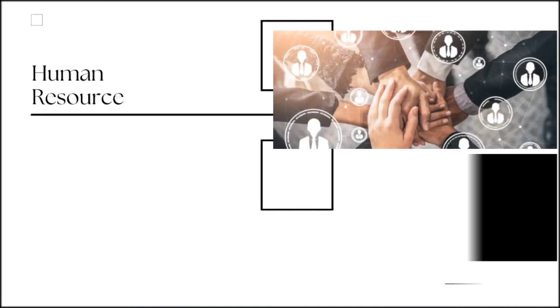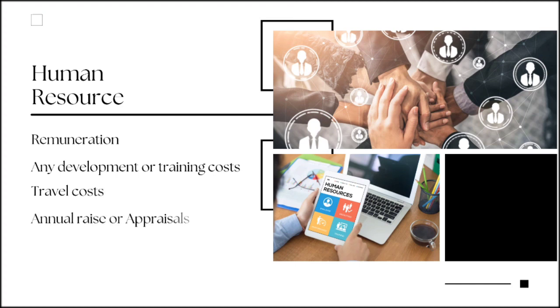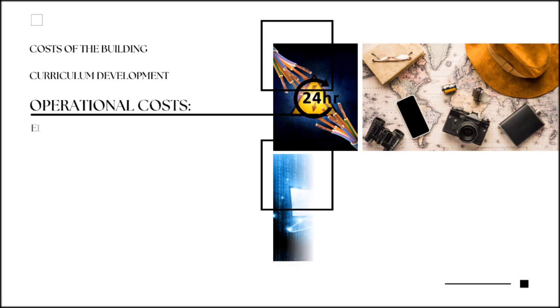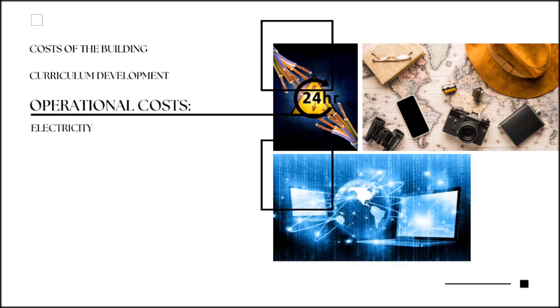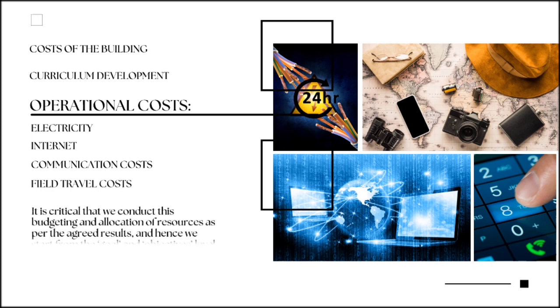For example, for human resources, we need to add remuneration, any development or training costs, travel costs, not forgetting the annual raise or appraisals, and other related costs. Similarly, we need to estimate the costs of the building and curriculum development costs related to technical expertise. Lastly, we also need to estimate other operational costs like electricity, internet, communication costs, field travel costs, and any contingencies.